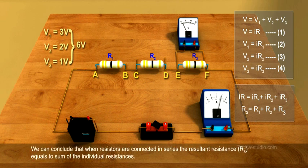We can conclude that when resistors are connected in series, the resultant resistance RS equals the sum of the individual resistances.